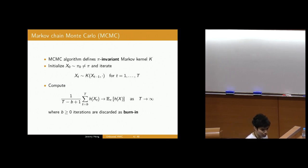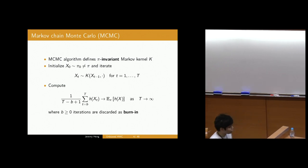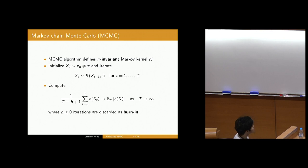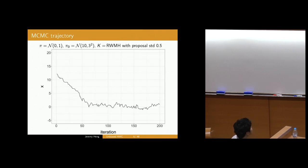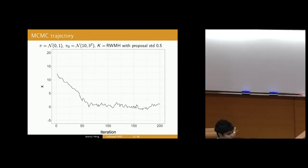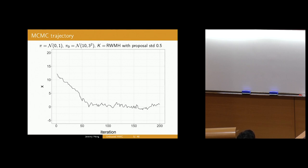Under very mild assumptions on the algorithm itself, you can guarantee using the Ergodic theorem that this will be a consistent estimator as you send the number of samples to infinity. Here's a realization of an MCMC trajectory. I'm targeting a standard normal distribution with an initial distribution that is quite far away from the origin, with quite a diffuse variance.